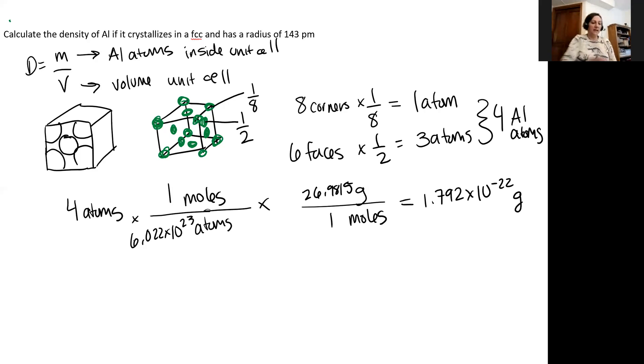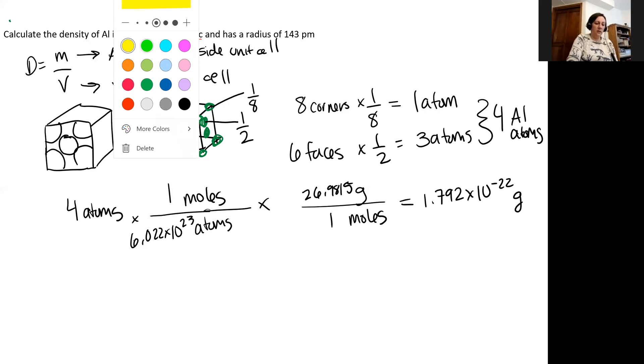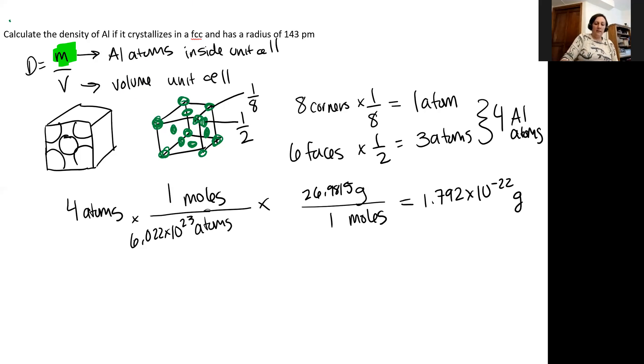Cool. So that is going to be my piece of my density equation right here. It's going to be the mass. So my next step is to figure out what that volume is. So I need the volume not of the atoms inside the unit cell, but rather the volume of the whole unit cell now that I know the mass of the aluminum that's in it. So I'm going to look at my cube again right here.